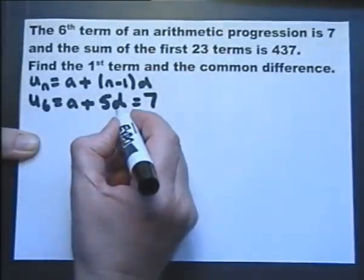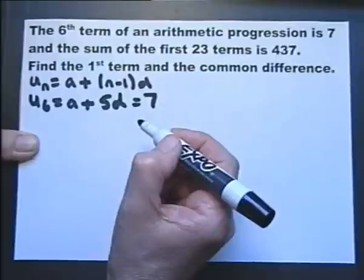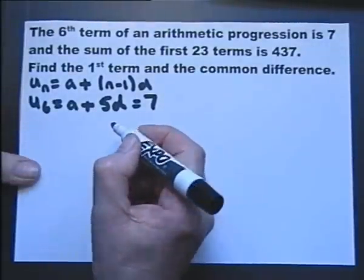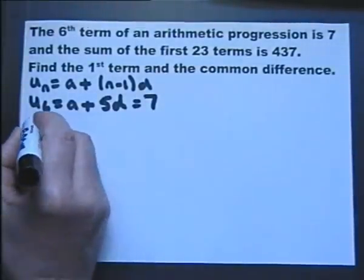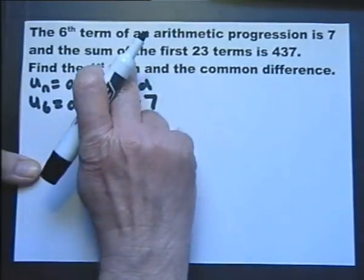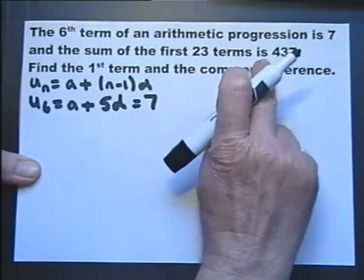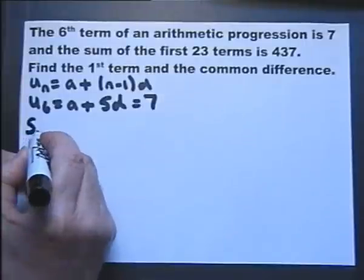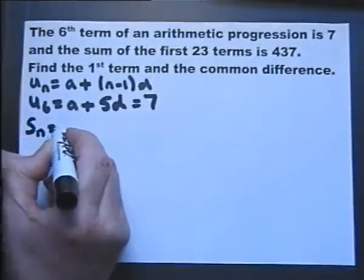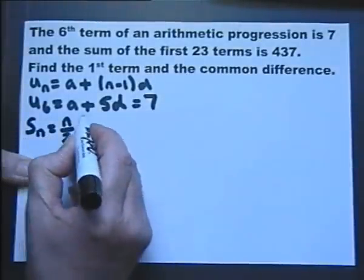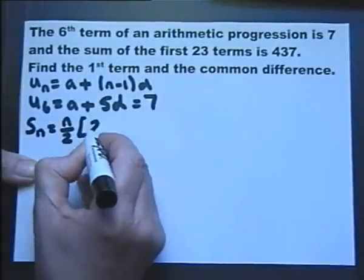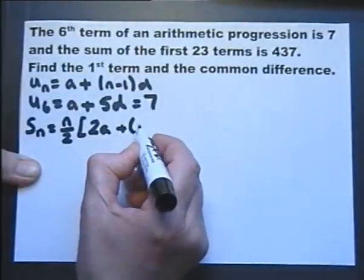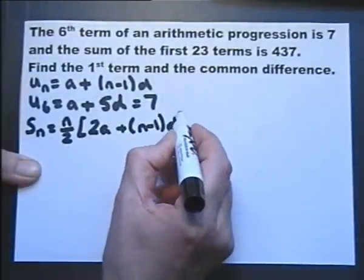If I can find another equation with A and D, I'll be able to use simultaneous equations to solve. So now let's look at the second sentence and use the sum of n terms formula. That formula is n over 2 times (2A plus (n minus 1)D).